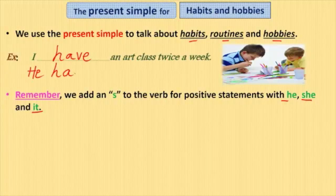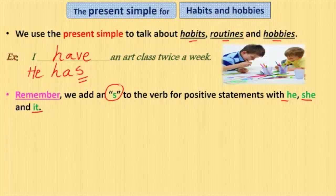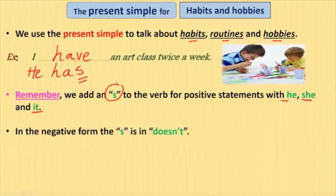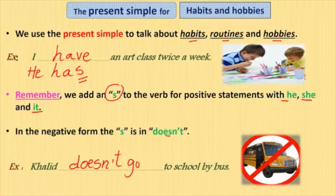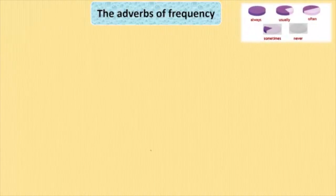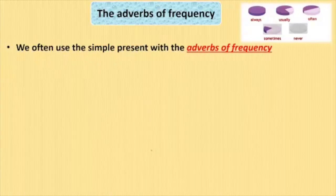He has an art class twice a week — 'has' has an S at the end of the verb. In the negative form, the S is in 'doesn't'. Example: He doesn't go to school by bus.